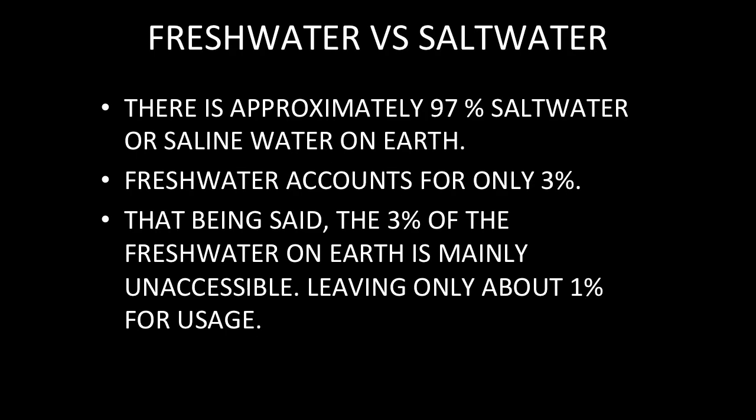So there are two types of water on the planet. The first is fresh water and the second is salt water. Salt water is simply water that is saline in nature, and salt water does account for 97% of the water on earth.